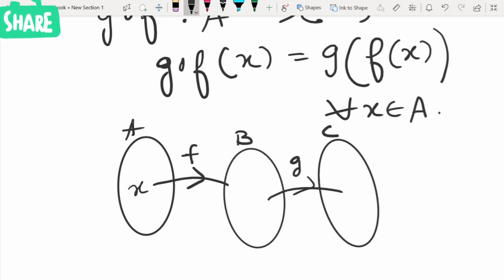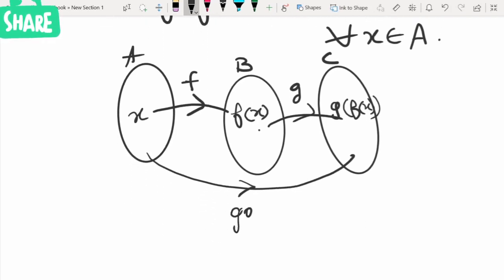Then for every x here, f will take it to f of x, and for every element here g will take it to g of f of x. So g composition f is a function which connects A and C.